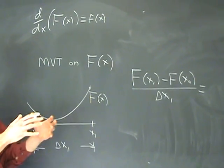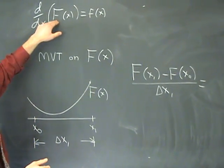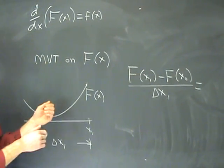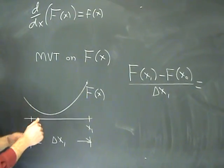For the purpose of this series of videos, we're going to be dealing with two functions, big F and little f, where the derivative of big F is little f. So big F is an anti-derivative of little f.